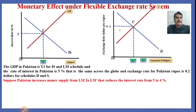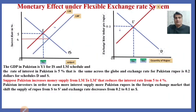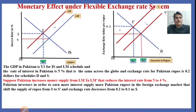Suppose Pakistan increases money supply, shifting LM to LM dash, which reduces the interest rate from 5% to 4%. Now Pakistan investors, in order to earn more interest, supply more Pakistan rupee in the foreign exchange market. This shifts the supply of rupee from S to S dash, and the exchange rate decreases from 0.2 to 0.1 US dollars.